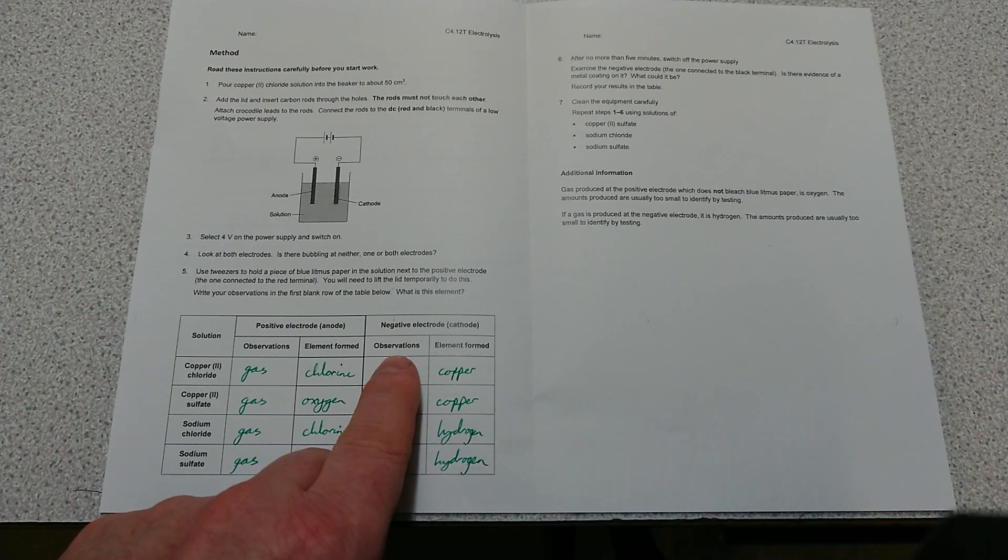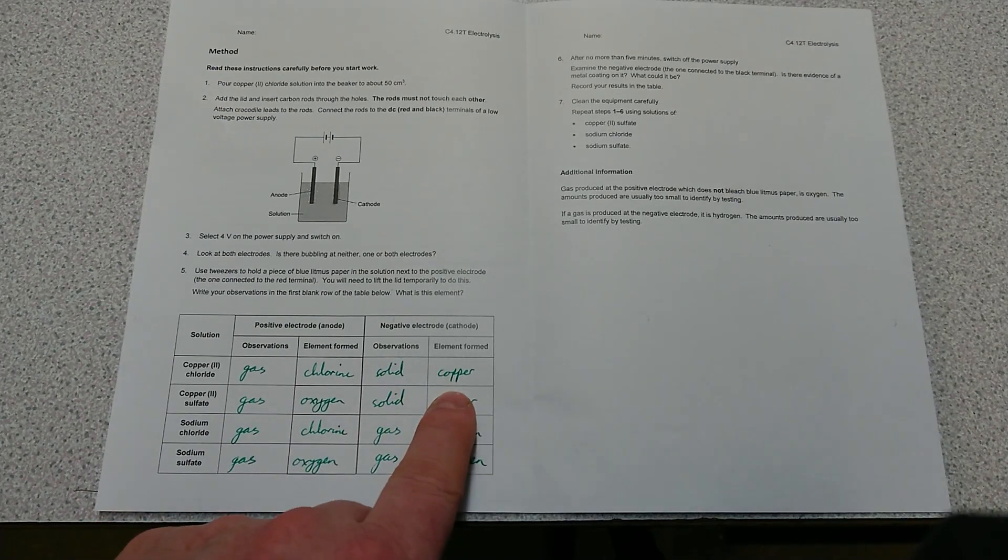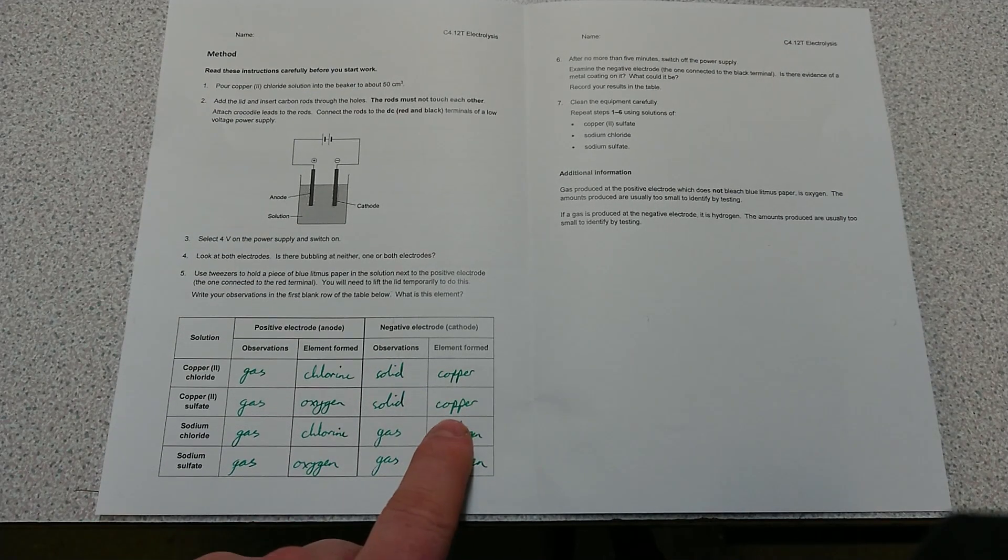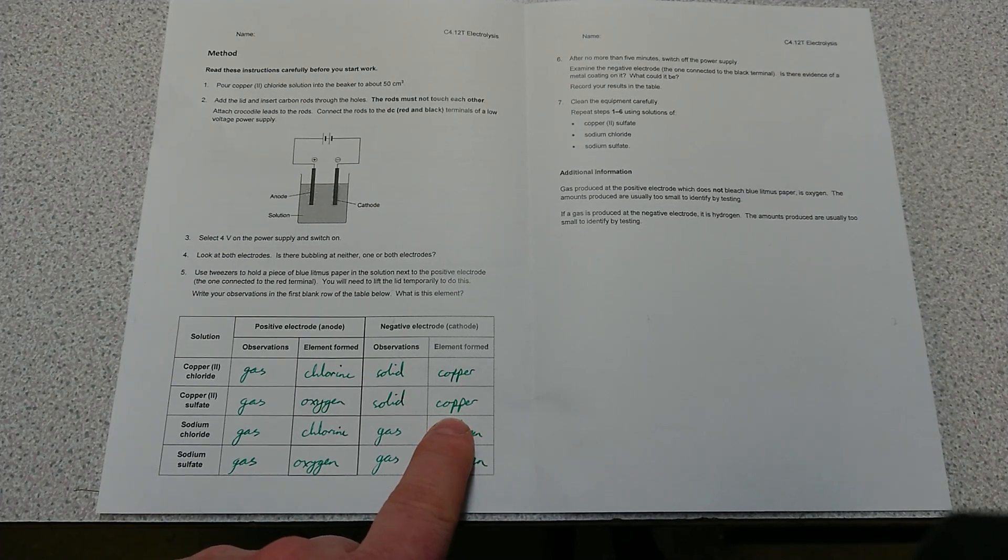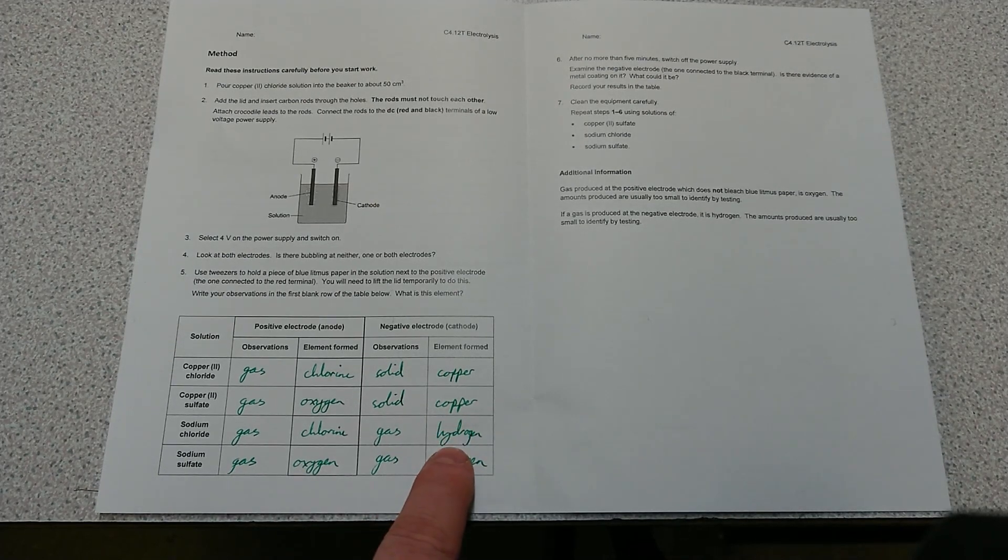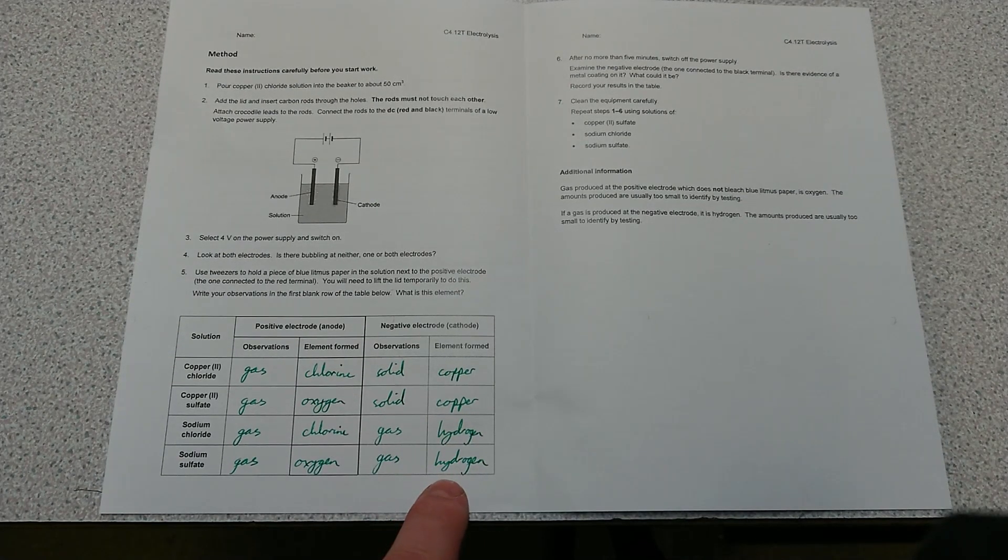On the cathode, we got copper from copper chloride, copper from copper sulfate, and then for the sodium chloride and sodium sulfate we got hydrogen.